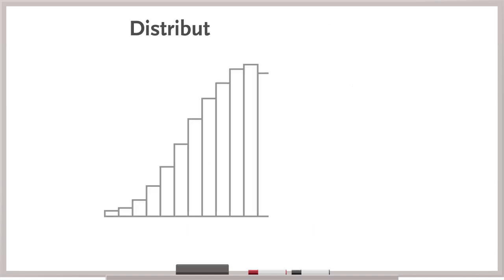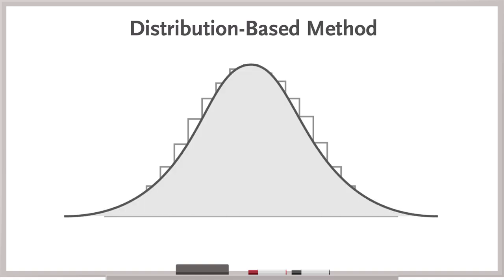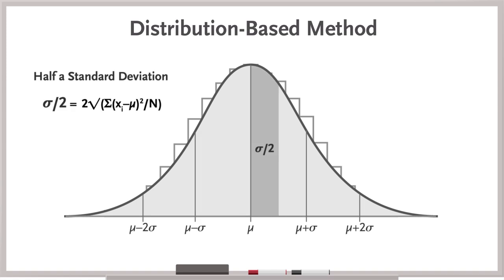An alternative is the distribution-based method. This approach uses calculations based on the distribution of the data, such as taking half a standard deviation of the baseline measure or using the standard error of measurement.